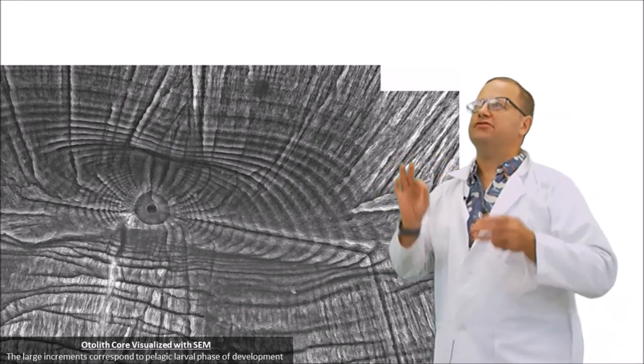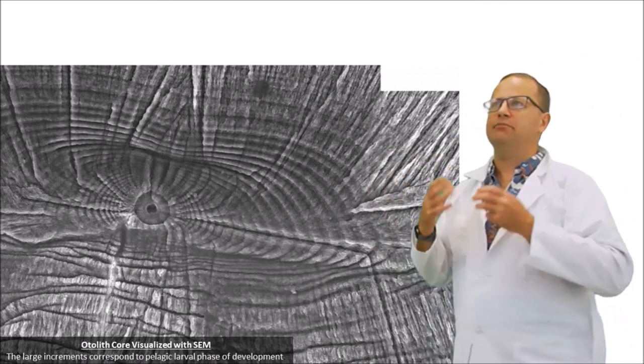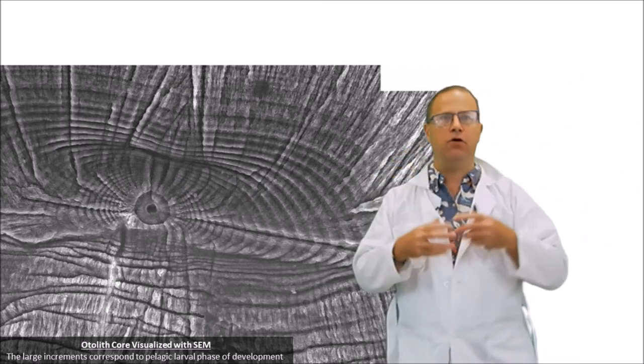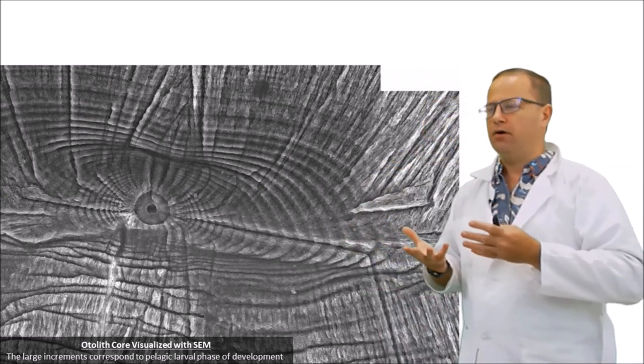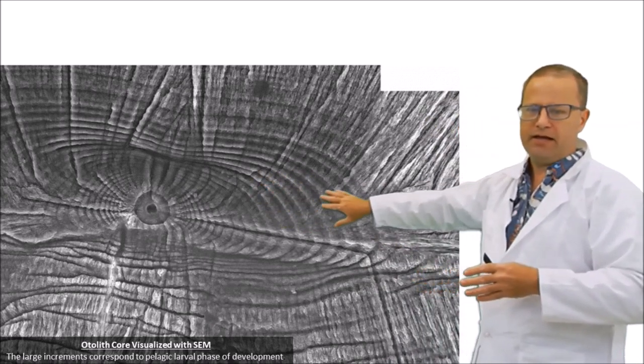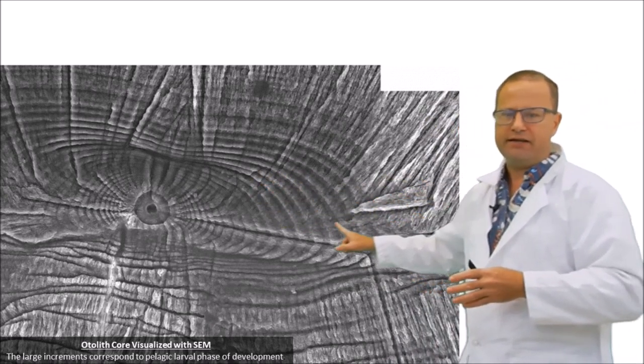How do we know how old fish are and how long they spend in the plankton or as larvae? Well, it turns out they have these little bones in their head called otoliths, oto meaning bone. And if you cut those bones up, you can count literal rings on them. And these first sets of rings right here indicate the number of days we think they spend in the pelagic larval duration or in the water column.